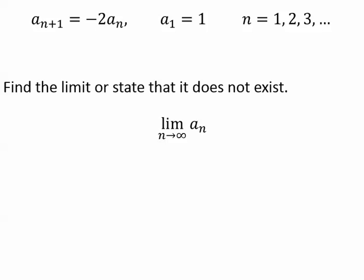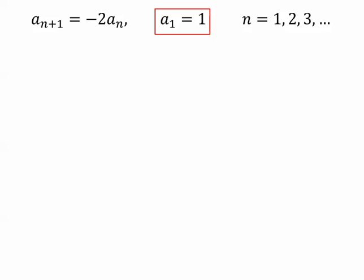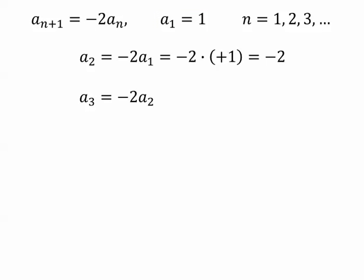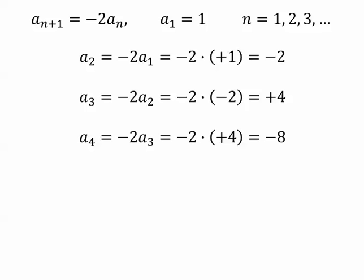Let's look at this sequence given by a recurrence formula — find the limit or state that it does not exist. I'll look at the first few terms. The first term is 1. A sub 2 equals negative 2 times a sub 1, so a sub 2 equals negative 2. A sub 3 is a sub 2 times negative 2, which gives positive 4. A sub 4 is a sub 3 times negative 2, giving negative 8. So the terms are 1, negative 2, positive 4, negative 8.